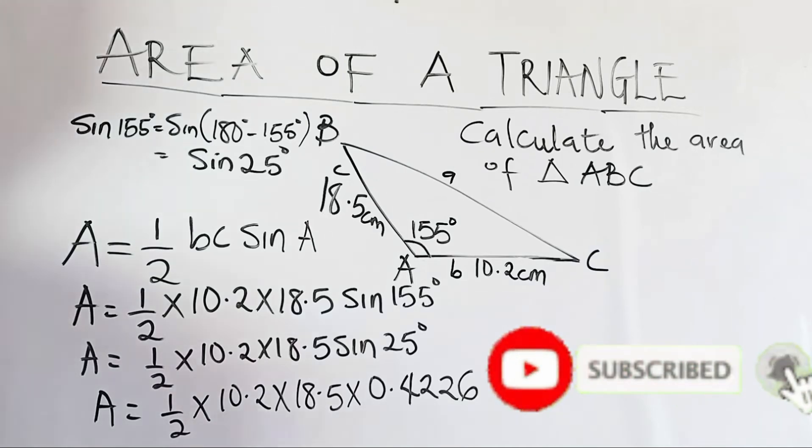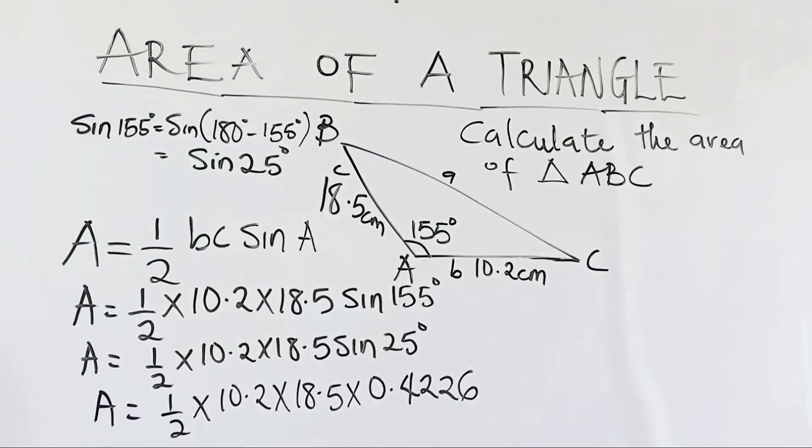So the area equals 1 over 2 times 10.2 times 18.5 times the value for sine 25 is 0.4226. If you have followed me up to this point in this video, that means you are enjoying the lesson. And if you are not subscribed, then support me by subscribing to my channel. Put on your post notifications so that when next I post any video, you will be the first to see it. Thank you.